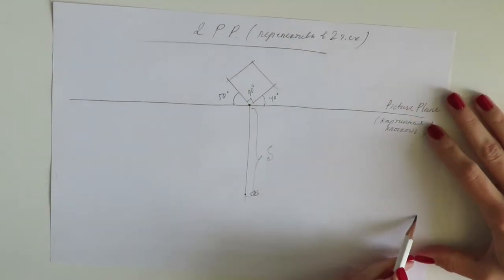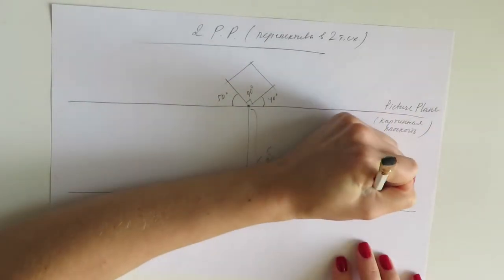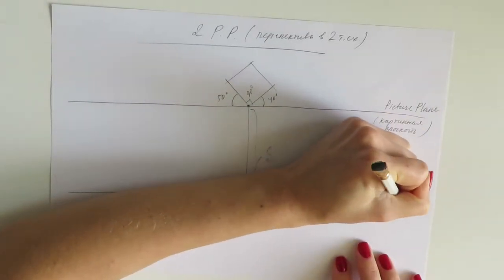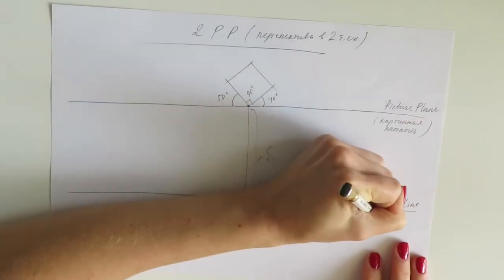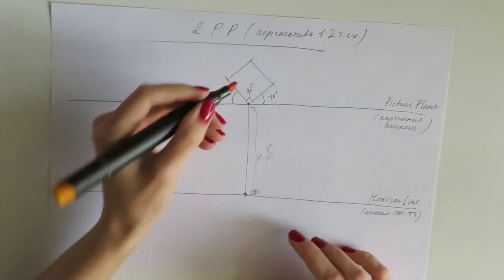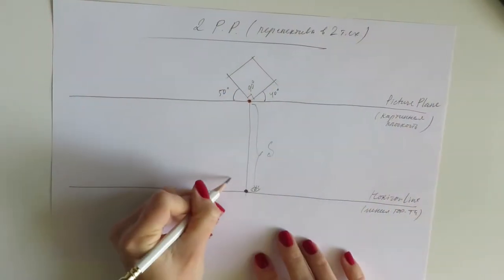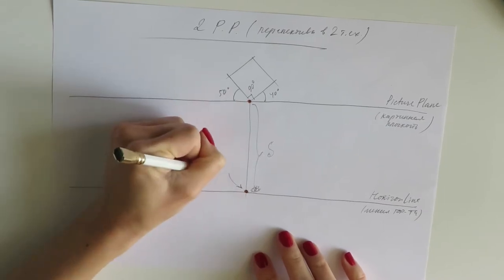Through the station point runs the horizon line. So once again, the station point is the point which I marked with an I.